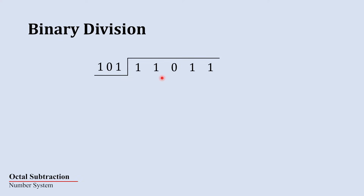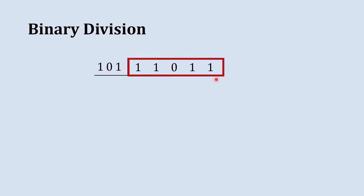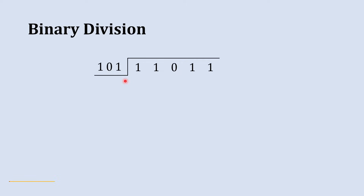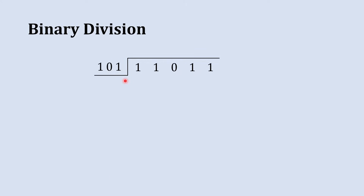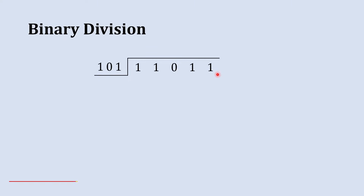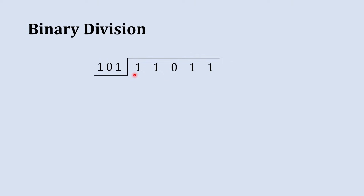We are going to divide these two numbers. This number is known as our dividend and this number is known as our divisor. The first thing to keep in mind is that in binary addition, subtraction, and multiplication, you always start the arithmetic operation with the least significant bit, whereas in binary division we always start with the most significant bit.